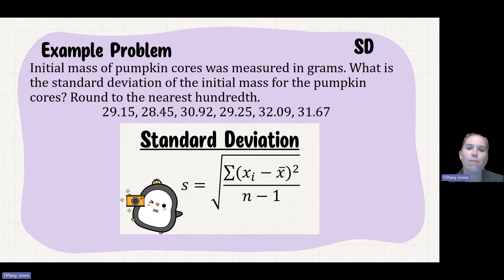So the initial mass of pumpkin cores was measured in grams. What is the standard deviation of the initial mass for the pumpkin cores rounded to the nearest hundredth? Now, oftentimes with these questions in AP bio, they're gonna tell you what to round to.